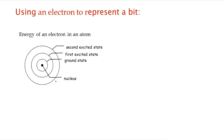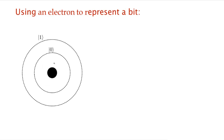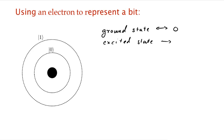So now, if we wanted to represent a bit of information, what we could do is make sure that the energy of this electron is high enough so that it could be in the ground or the first excited state, but not high enough to be in any higher energy state. So we have our hydrogen atom. The electron is allowed to either be in the ground state or in the first excited state, which we'll call the excited state. We could encode the bit by saying that the ground state encodes for zero, and the excited state encodes for one.